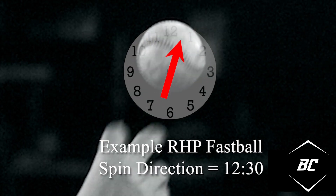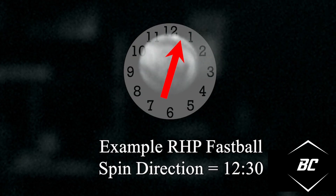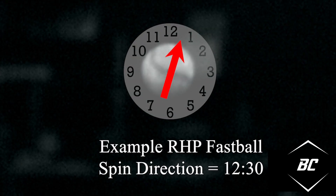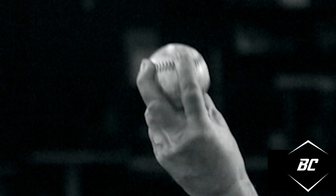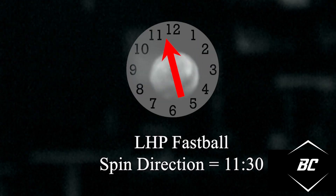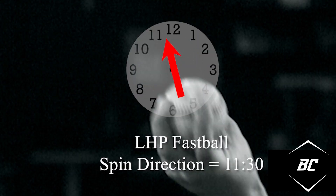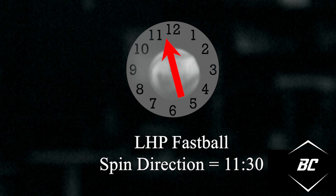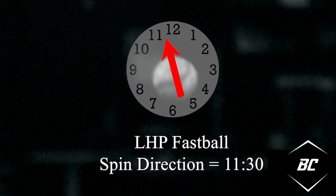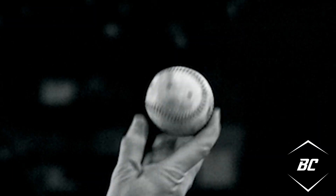Remember, righties and lefties will act as mirror images of each other when they release the ball. So a righty's 12:30 fastball would be comparable to a left-handed pitcher's 11:30.